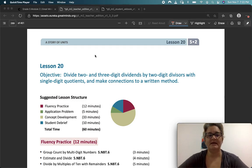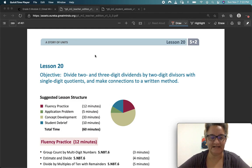Welcome to Eureka Math. This is Module 2, Lesson 20, and our objective today is to divide two- and three-digit dividends by two-digit divisors with single-digit quotients and make connections to a written method.